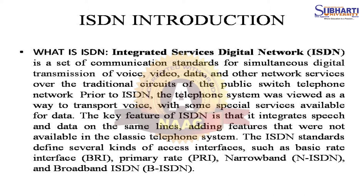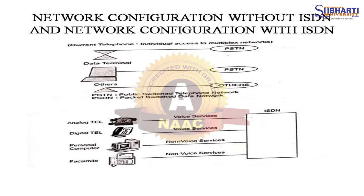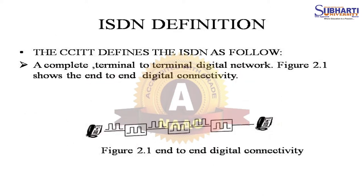ISDN adds features that were not available in the classic telephone system. The ISDN standards define several kinds of access interfaces such as Basic Rate Interface, Primary Rate, Narrowband, and Broadband ISDN. The first diagram shows network configuration without ISDN, and the next diagram shows network configuration with ISDN.